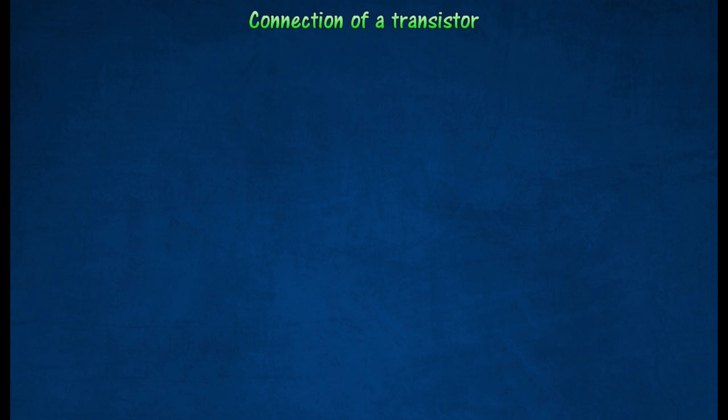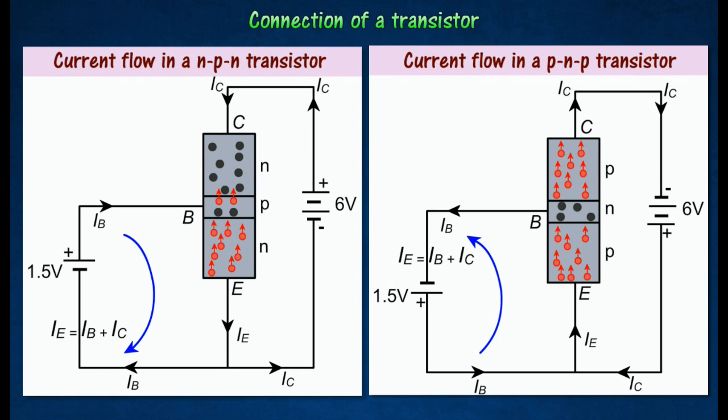The correct way of connecting a transistor to a battery depends on the type of transistor. To connect an NPN transistor, the negative pole of one battery is joined to E, and its positive pole to C.